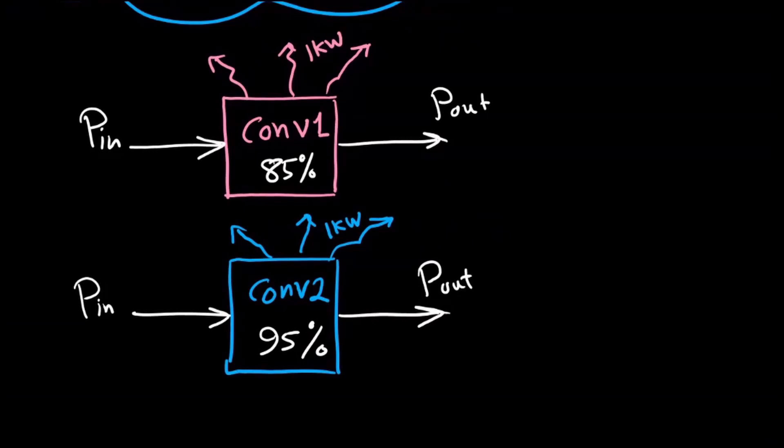If we calculate the output power for the converters using the equation that we memorized, we'll find that the output power for the first converter equals 5.67 kilowatts, and the output power for the second converter equals 95 over 1 minus 95 percent times 1 kilowatt, which equals 19 kilowatts.